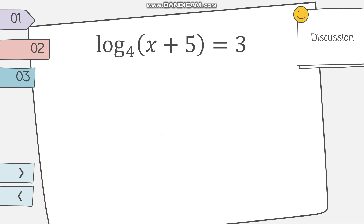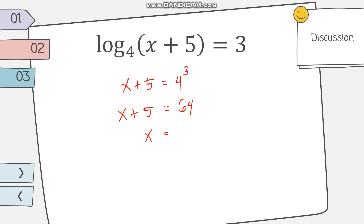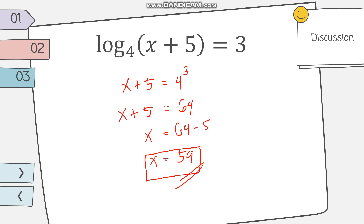Another example: logarithm of x plus 5 base 4 equals 3. Writing it in exponential form, x plus 5 equals 4 raised to 3. Since 4 raised to 3 equals 64, we have x plus 5 equals 64. Moving 5 to the other side gives x equals 64 minus 5, so x equals 59.